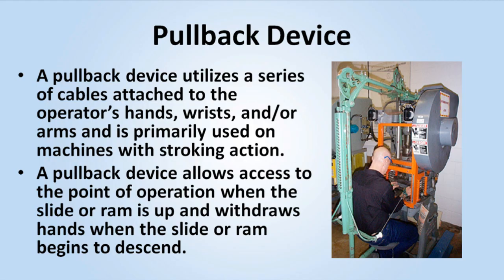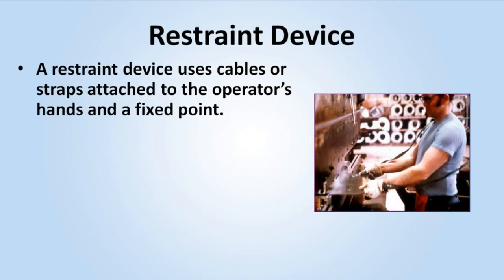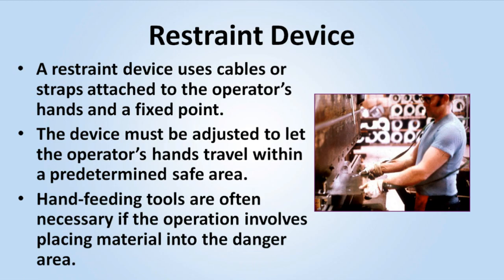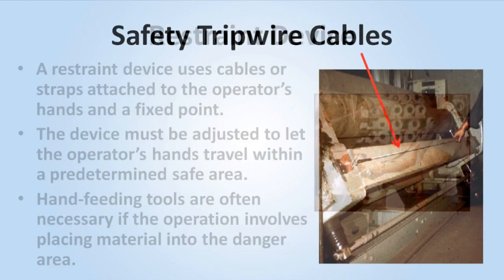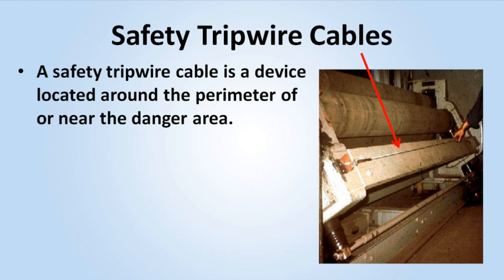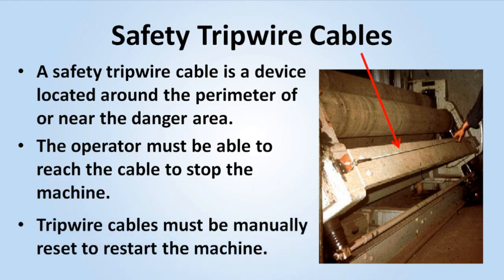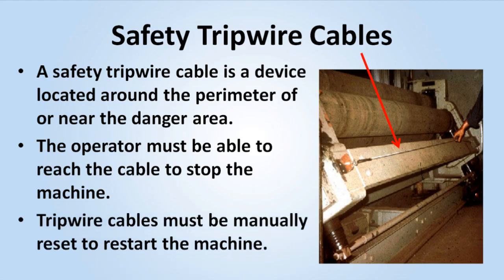A pullback device allows access to the point of operation when the slide or ram is up, and withdraws hands when the slide or ram begins to descend. A restraint device uses cables or straps attached to the operator's hands and a fixed point. The device must be adjusted to let the operator's hands travel within a predetermined safe area. Hand feeding tools are often necessary if the operation involves placing material into the danger area. A safety tripwire cable is a device located around the perimeter of or near the danger area. The operator must be able to reach the cable to stop the machine. Tripwire cables must be manually reset to restart the machine.